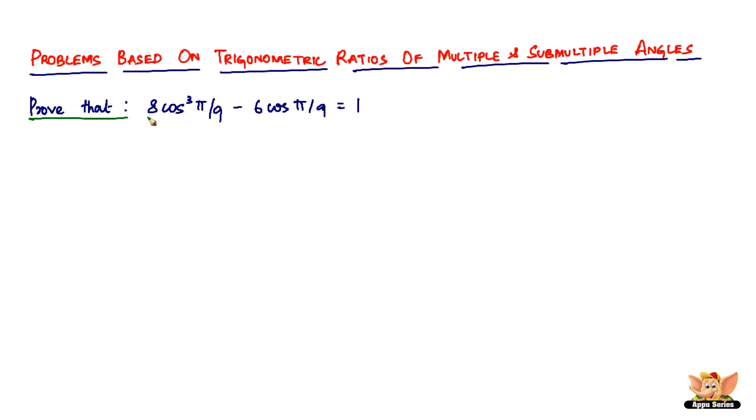So take this, you can clearly see that in 8 and 6 there is 2, you can take out 2. You can also take out cos(π/9), but that's not the point.